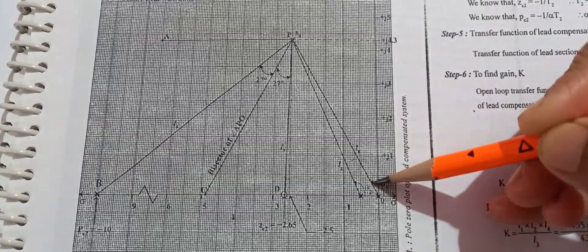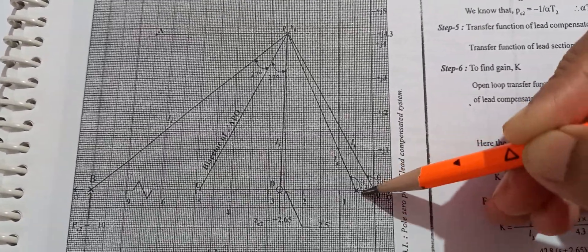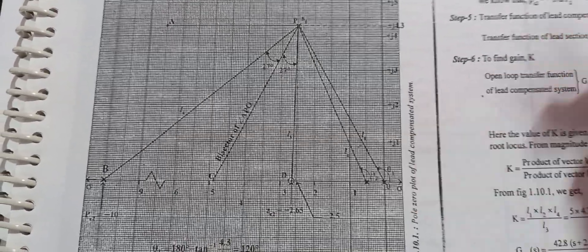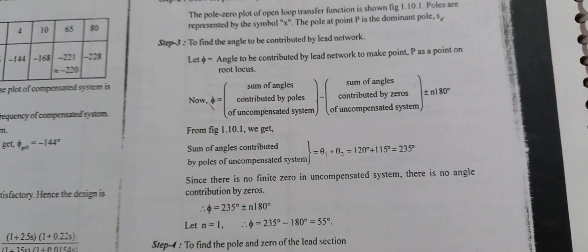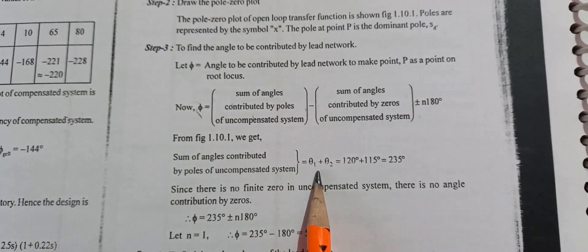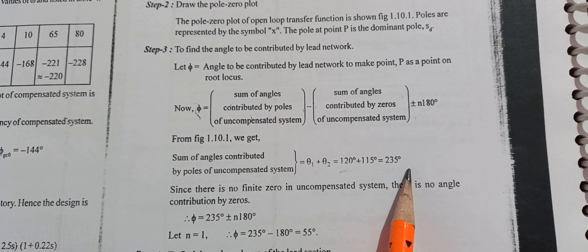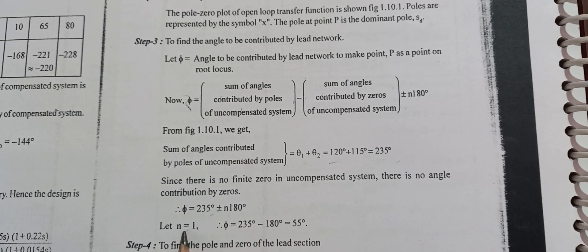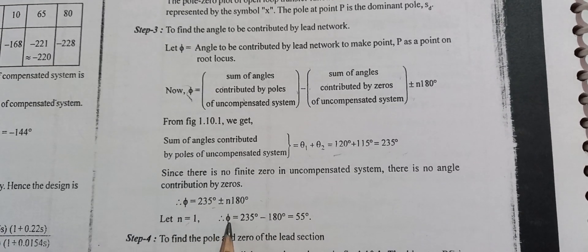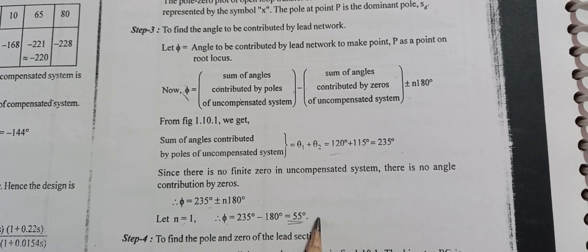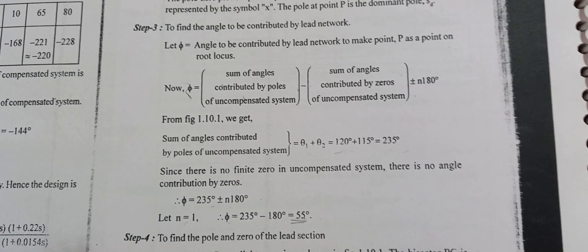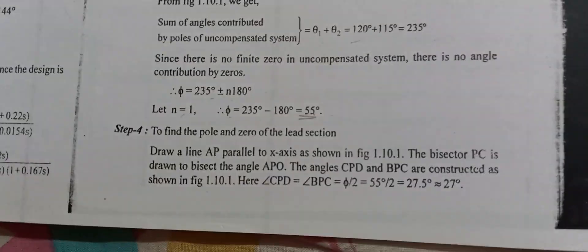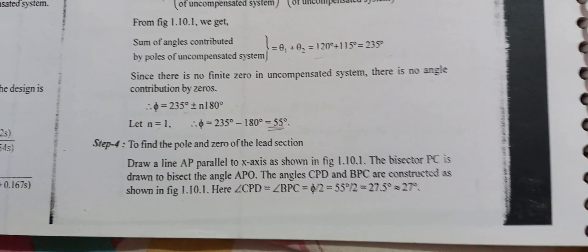The angle contribution involves two poles, theta_1 and theta_2. Theta_1 plus theta_2 gives the sum of pole angles. With n equal to 1, the angle condition gives us phi equal to 55 degrees. We then apply the bisector method and divide phi by 2, giving 55/2 degrees.